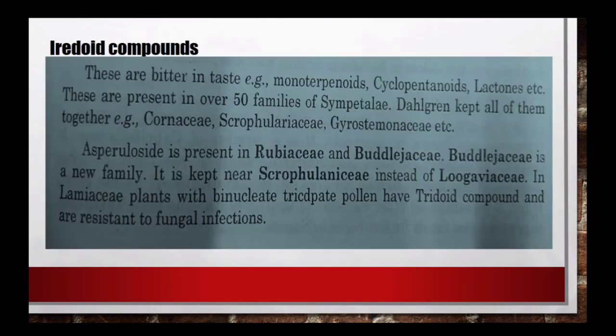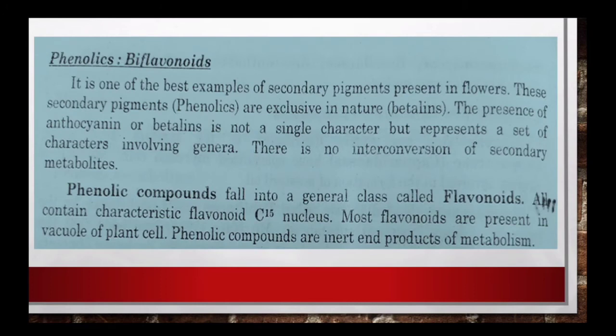Iridoid compounds bitter taste के होते हैं, ये monoterpenoids हैं - cyclopentenoid lactones। यह Sympetalae में 50 families से भी ज्यादा में पाए जाते हैं, तो इन सभी families को एक साथ रखा गया है। Asperifoliate, Rubiaceae और Boraginaceae में पाए जाते हैं। Lamiaceae में भी iridoid compounds पाए जाते हैं जो fungus से resistance show करते हैं। Biflavonoids यह secondary pigments का example है, flowers के अंदर पाए जाते हैं।